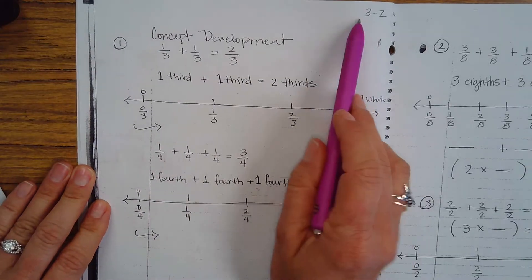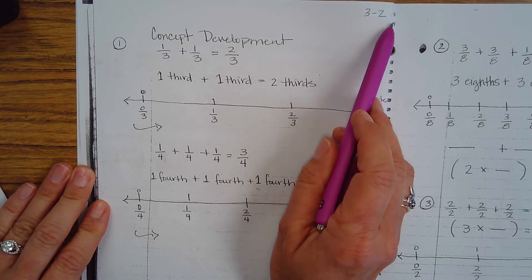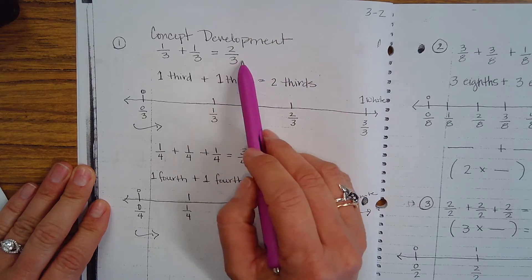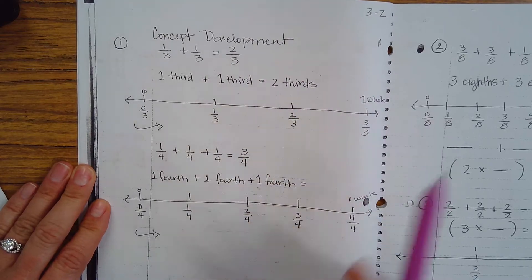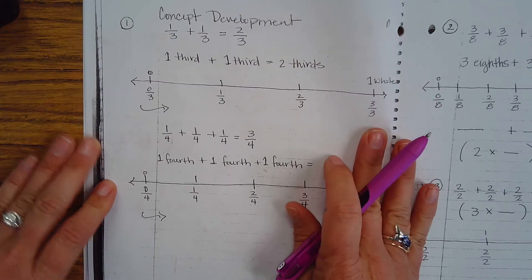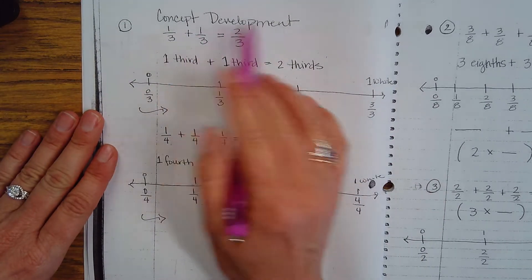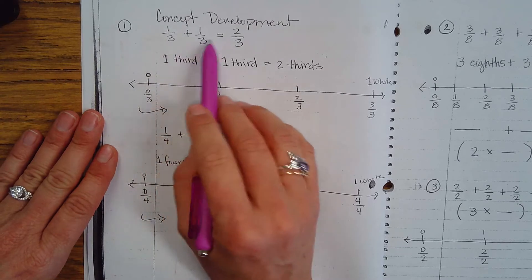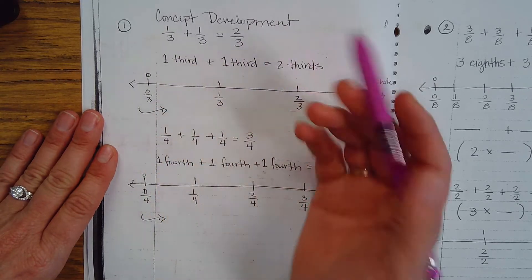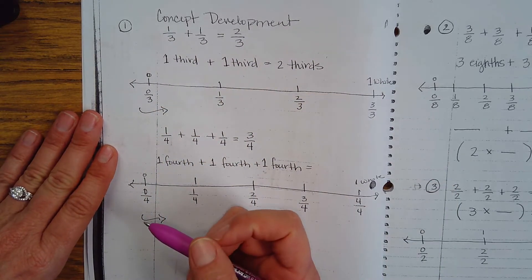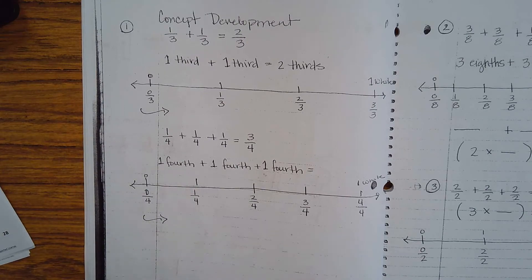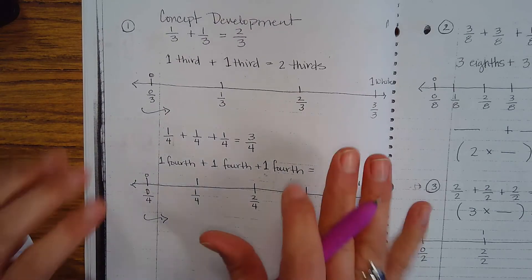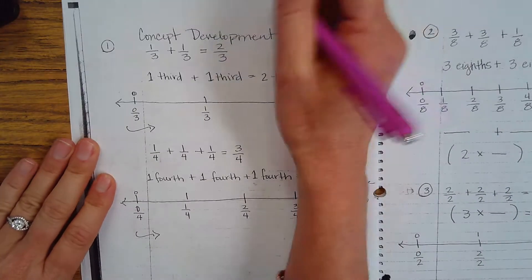This is Engage New York, Module 3, Lesson 2. This is Concept Development, Part 2 of the lesson. Today we are adding up numbers using like denominators, which is probably the nicest, easiest, friendliest way to add a fraction — having like denominators.